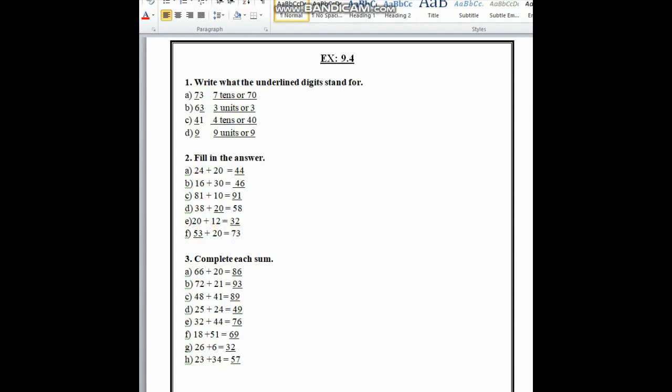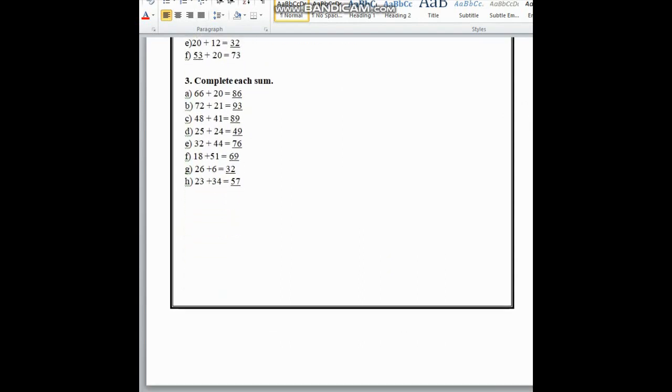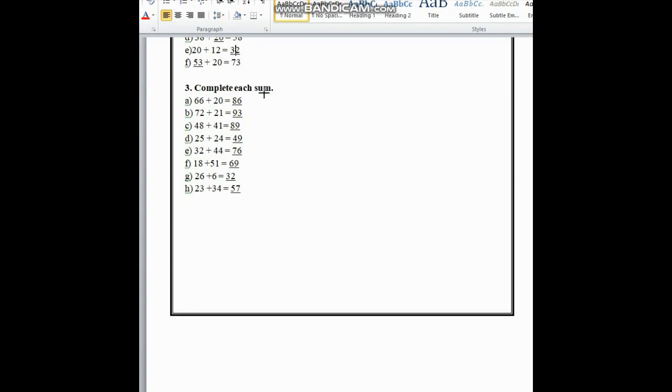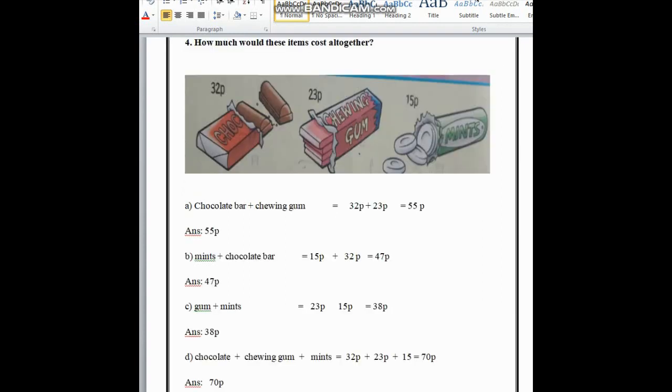In number 3, complete each sum. We have to do addition to find out all these numbers. Next one is how much would these items cost altogether? We can see chocolate 32 pence, chewing gum 23 pence, and mints 15 pence.